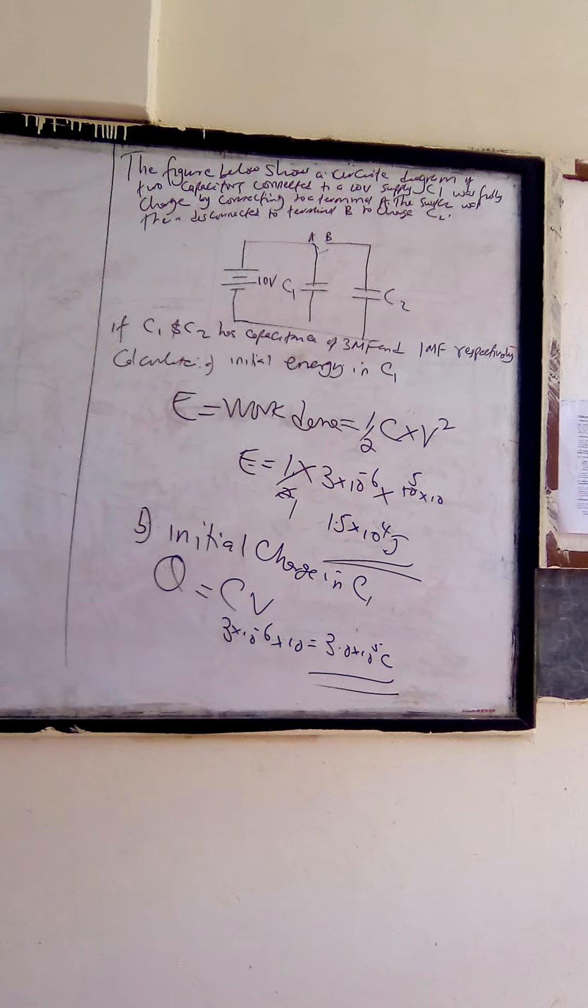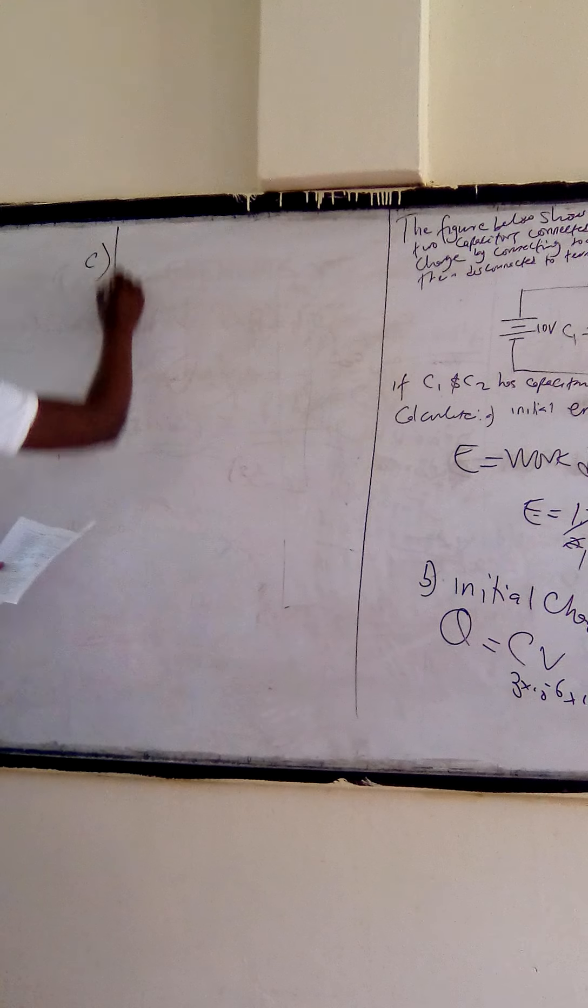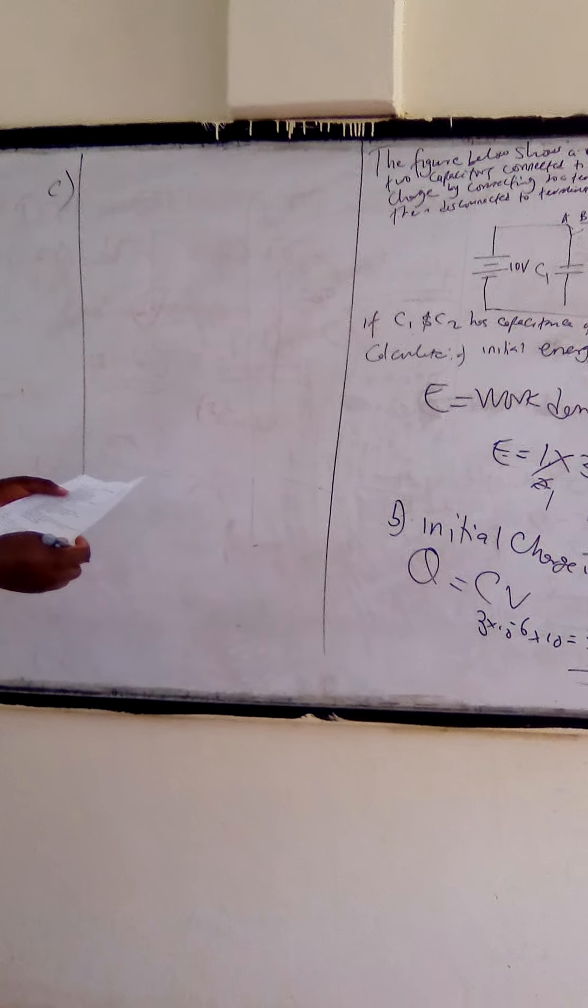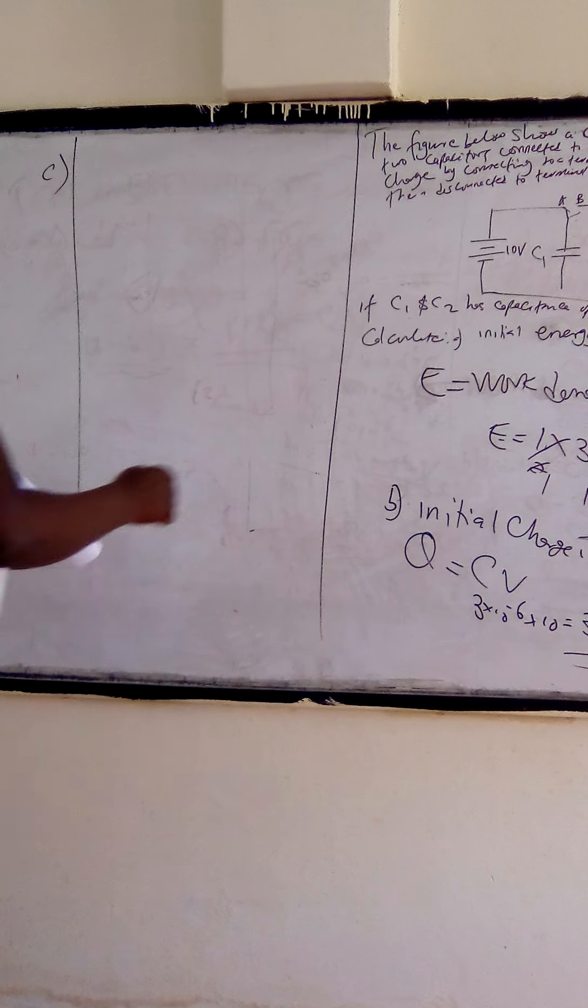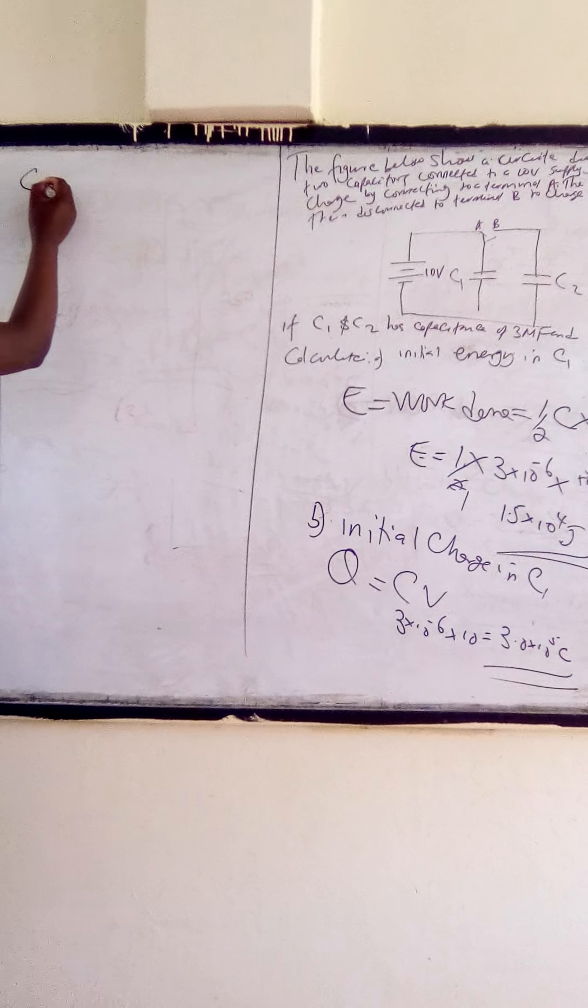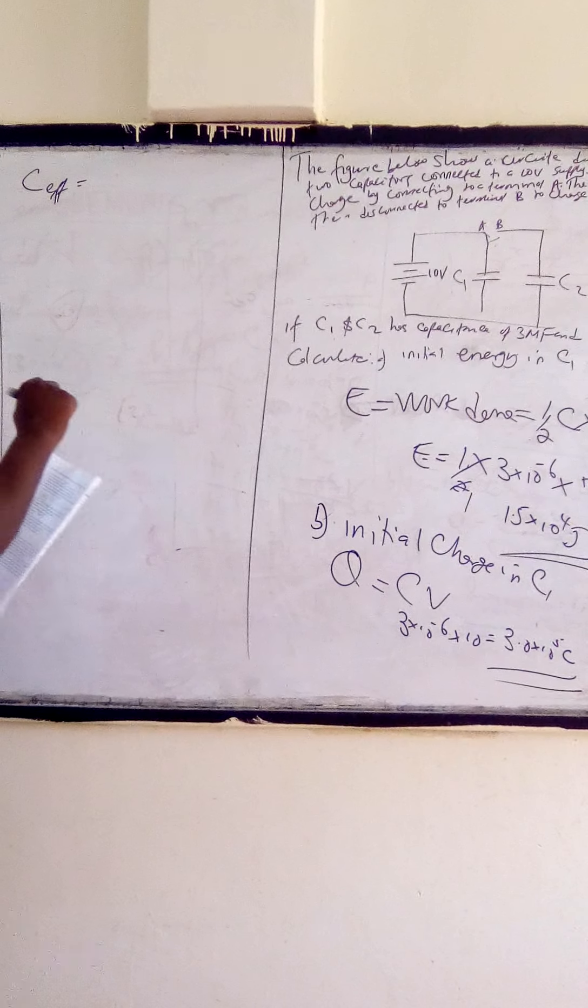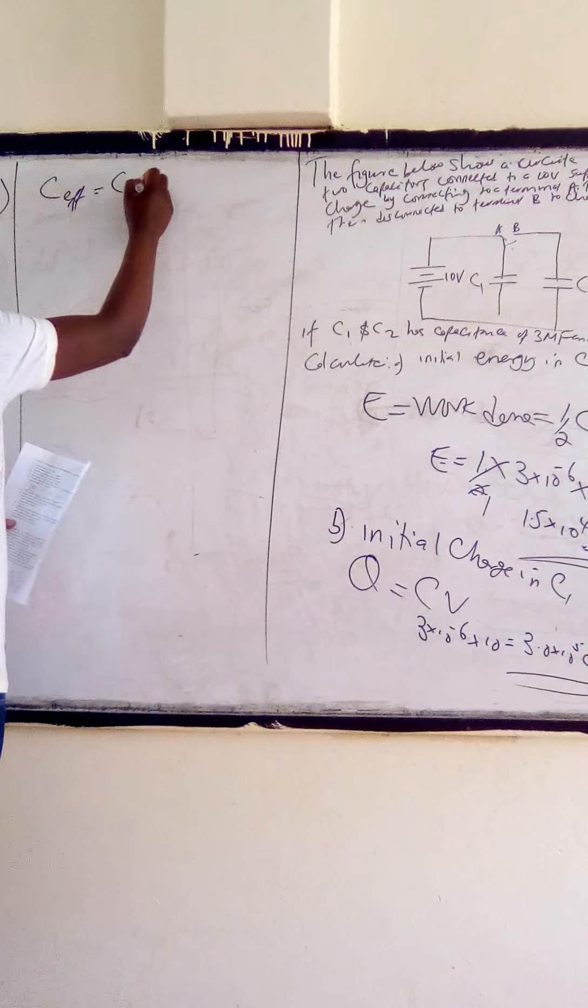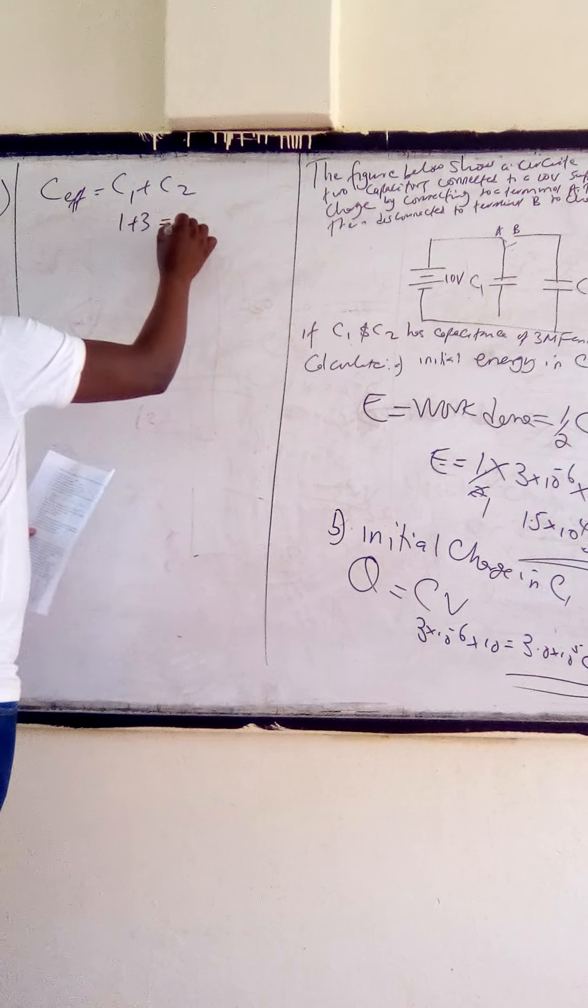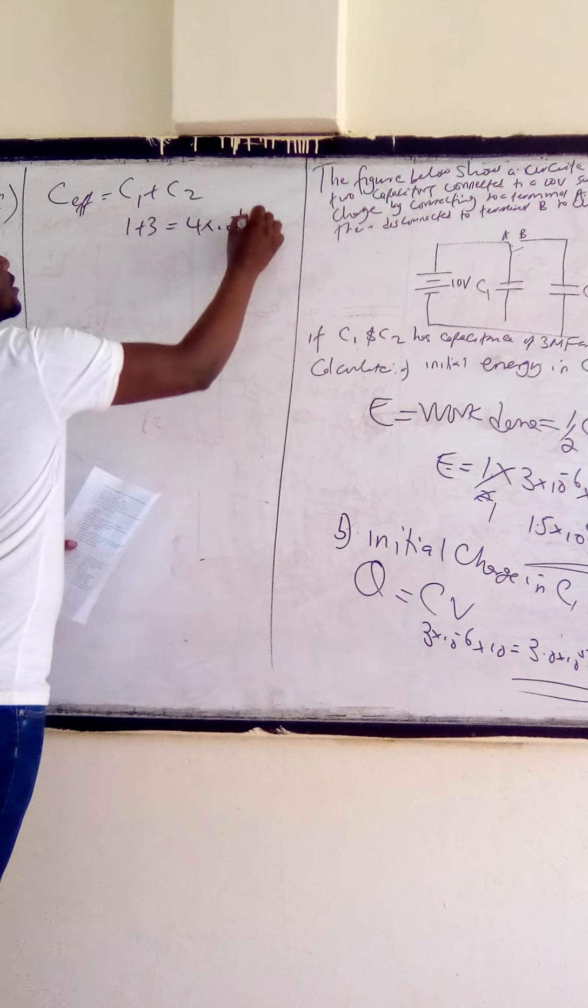So for part C, we are asked to calculate the effective capacitance of the circuit. Remember, the two capacitors are in parallel. For capacitors connected in parallel, we take C1 plus C2, so we have 1 plus 3, which is 4 times 10 power negative 6 Farad.